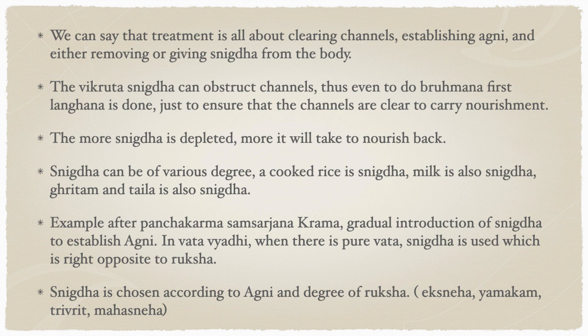Snigtha can be of various degrees — cooked rice, milk, ghee, and taila are all snigtha. After panchakarma we do samsarjana karma: manda, peya, vilapi, yavagu, odana, yusha. Manda and peya introduce a very mild, easily digestible form of snigtha to the system, gradually increasing in thickness. It is like a dying campfire: you have a spark, add small grass, blow air, add more gradually, and build a big fire. Similarly, we rebuild the agni by supplying small amounts of snigtha progressively.